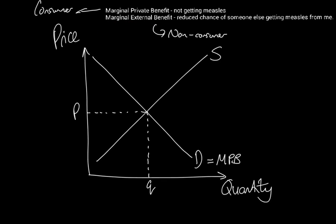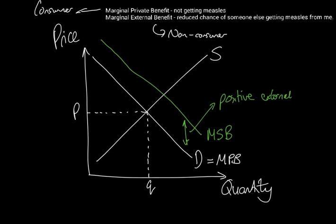There are extra benefits on top of private benefits — the external benefits. At any given quantity, there are additional benefits beyond my own private benefits, which means we end up with another curve: the marginal social benefit. This is not the marginal external benefit — it is private benefit plus external benefit combined. The externality is the size of the gap in between — that gap is the positive externality, i.e., the marginal external benefit. So: the demand curve equals marginal private benefit; the gap equals marginal external benefit; and marginal social benefit is the two added together.